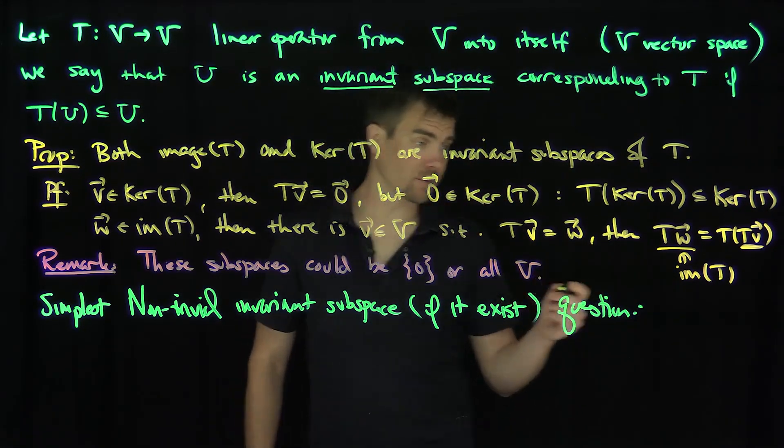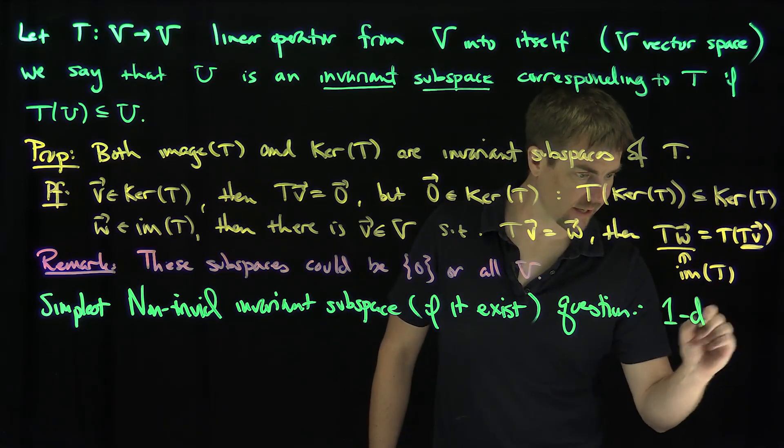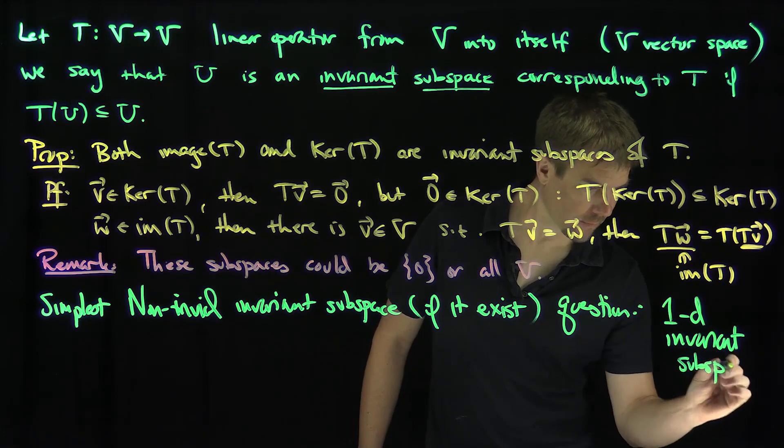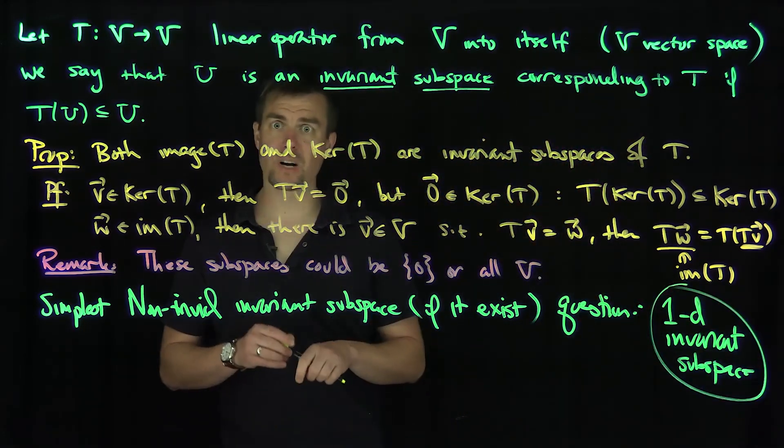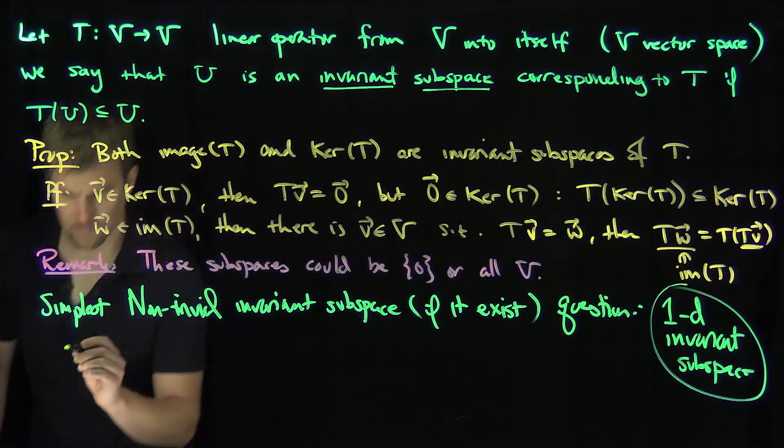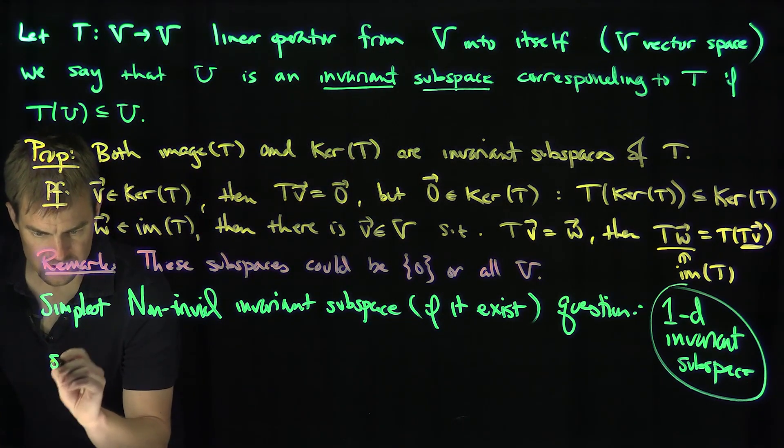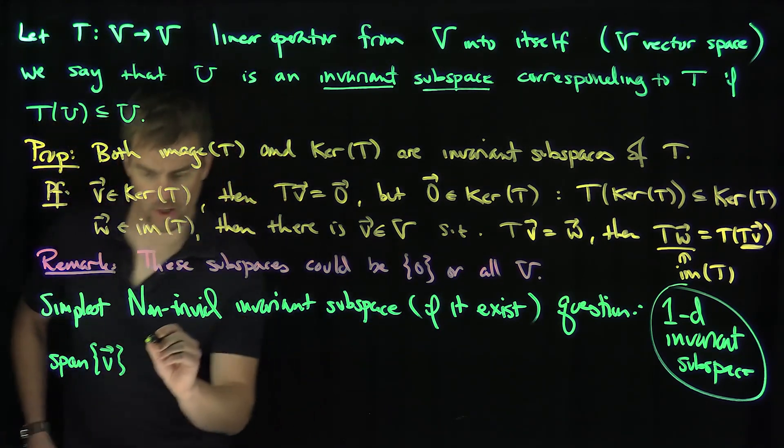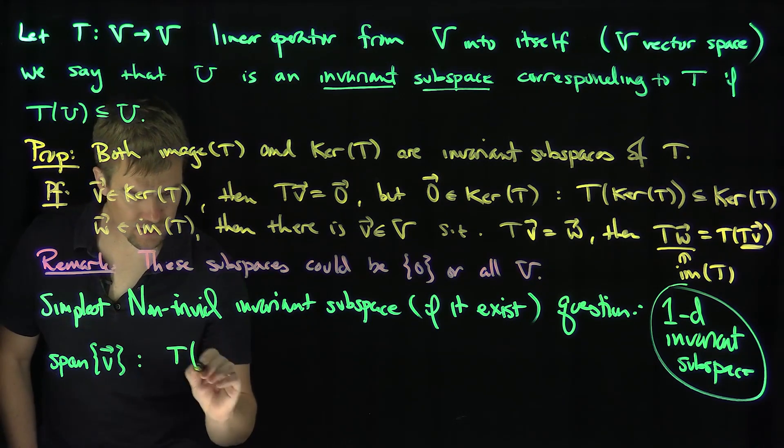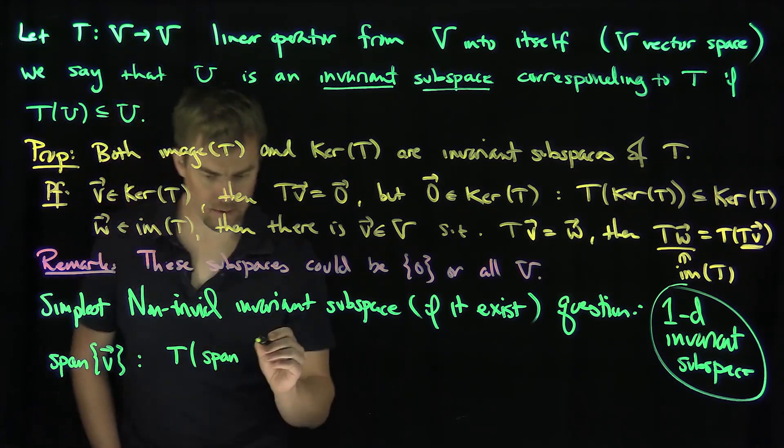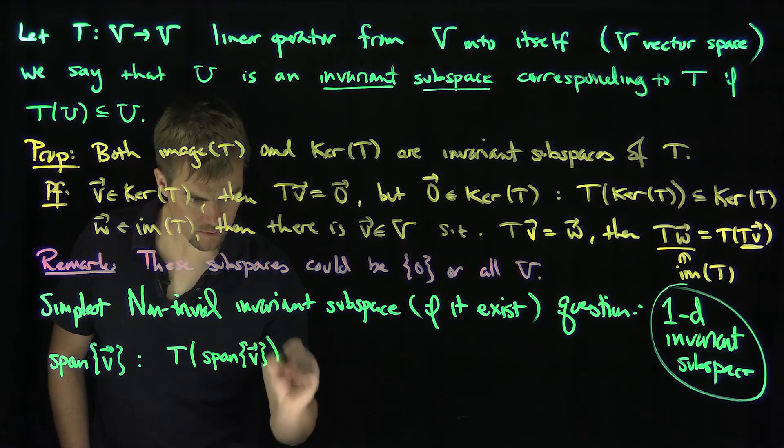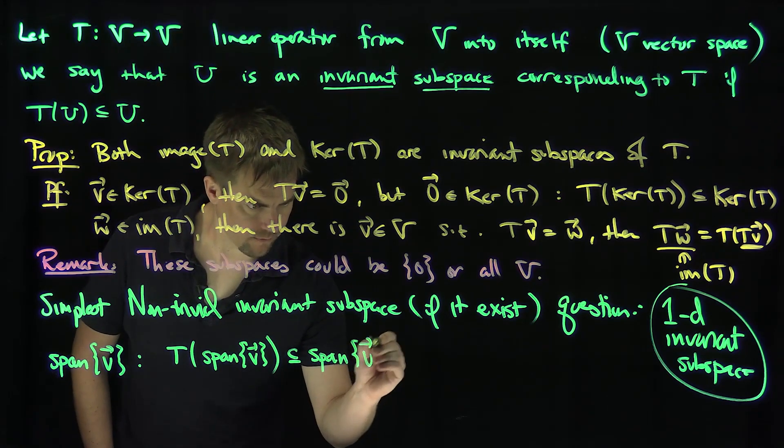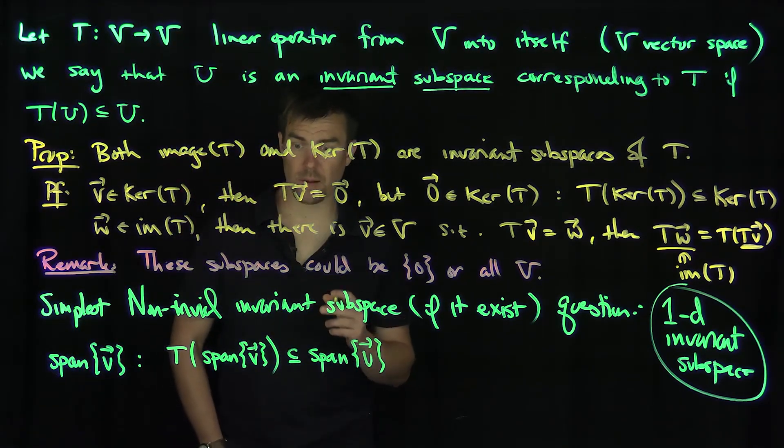Okay, so it's the simplest invariant subspace question. Well, we'll focus on the one-dimensional invariant subspace, the 1D invariant subspace problem. So if I want the one-dimensional invariant subspace problem, I want to know if I consider the span of a single vector v, I'd like to know the question: does T take the span of v into the span of v? That is the one-dimensional invariant subspace problem.